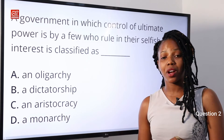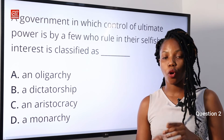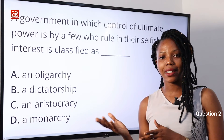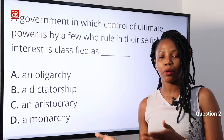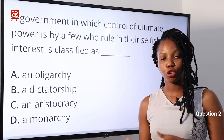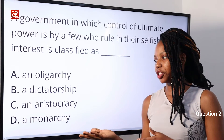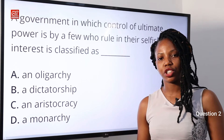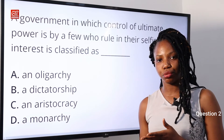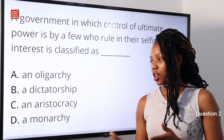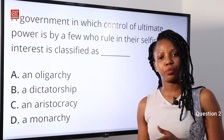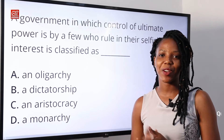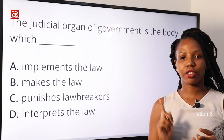A dictatorship is a form of government in which power is vested in a person or a group of people, but the aim is to abolish other political parties that might oppose their authority. An aristocracy is a form of government in which the best citizens rule. A monarchy is ruled by a king or queen. Option A — oligarchy — is the correct answer.